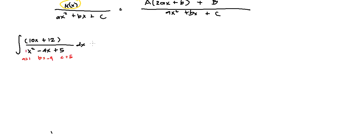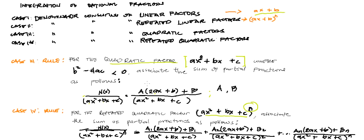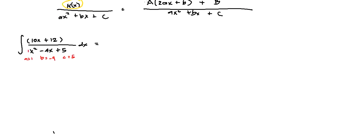We're in our a here is equal to 1, our b here is equal to negative 4, and our c is equal to 5. So according to our rule, since this is only raised to 1, then we have case 3.